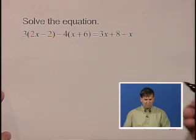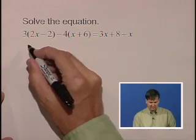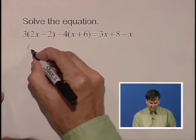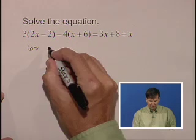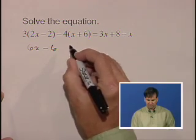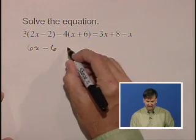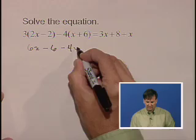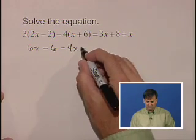We will start by distributing the parentheses. 3 times 2x is 6x. 3 times minus 2 is minus 6. Minus 4 times x is minus 4x. Minus 4 times 6 is minus 24.